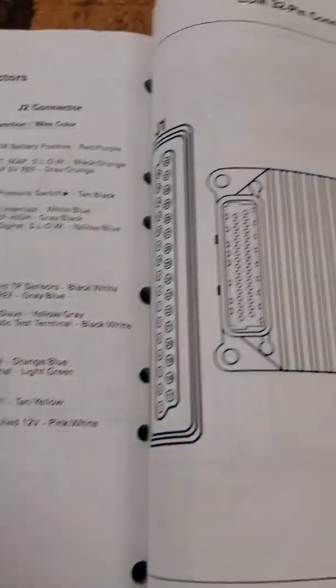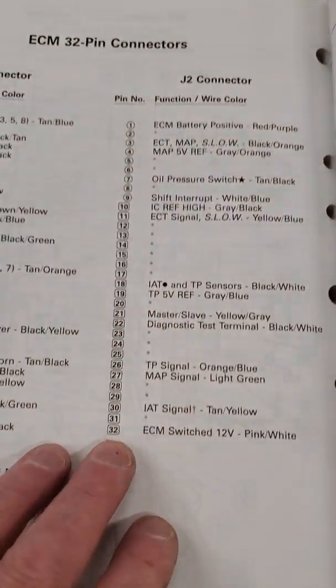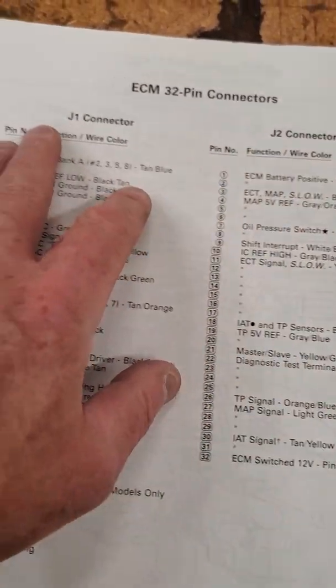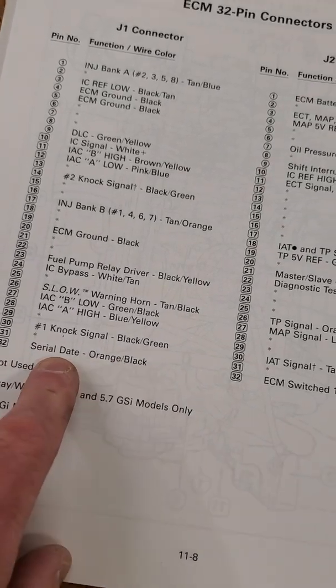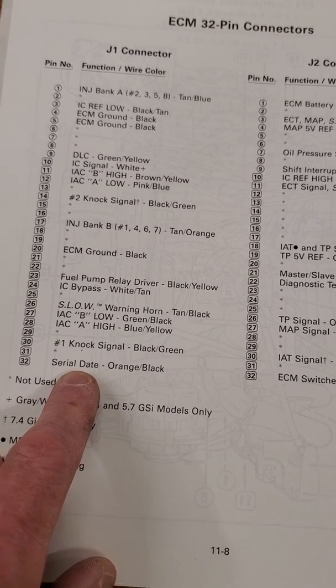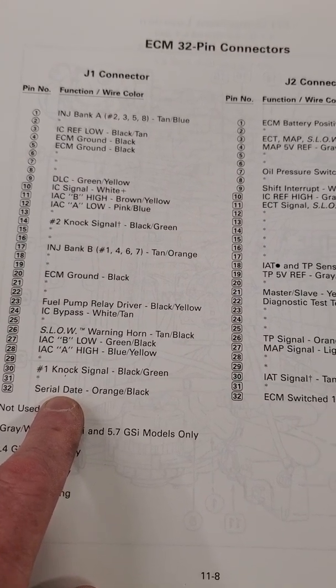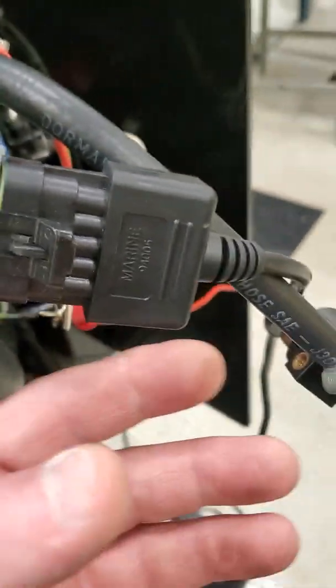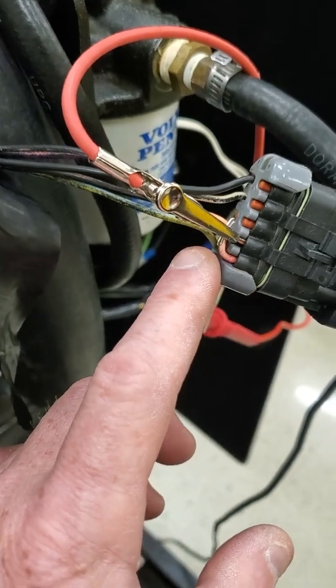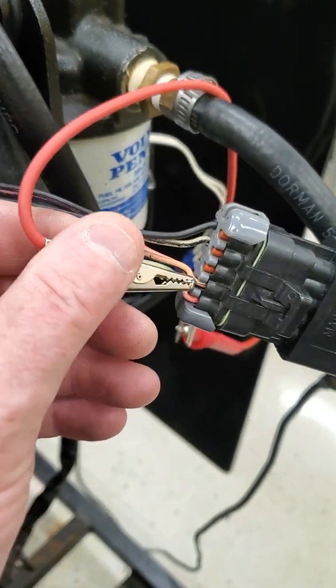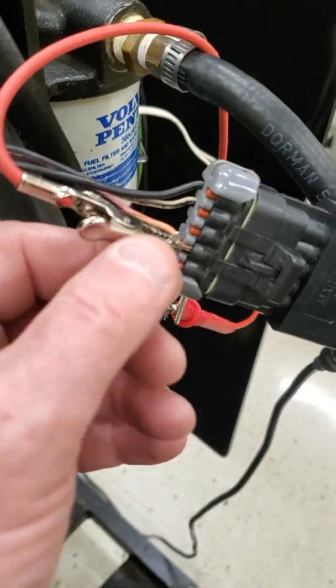All right, so I've got a MEFI-3 ECM here, and the J2 terminal and the J1 terminal, and the one I'm interested in is the serial data. So what's going to happen is when the communication from the scan tool asks the ECM for data, over here I have the diagnostic test terminal, and it's plugged into my scan tool, and I have a back pin probe here going into that orange and black wire. The other wire from my meter is just connected to ground off the back of the alternator.